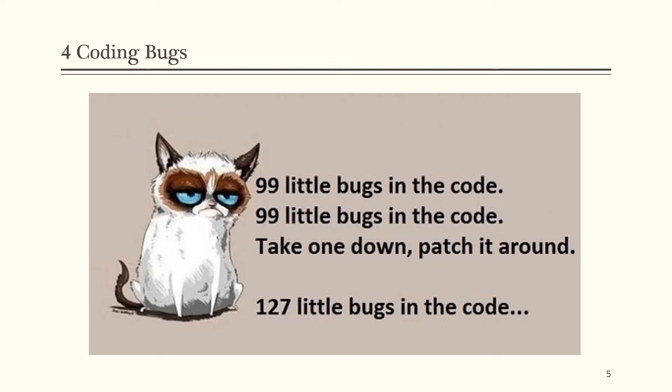There is a humorous analogy: 99 little bugs in the code — take one down, patch it around, and now there are 127 little bugs. When you miss a semicolon and compile the code, the compiler shows bugs in all the next lines. When you place the semicolon and recompile, a number of other bugs appear. This may have happened to you as a beginner in programming.